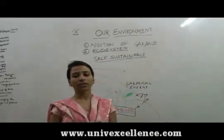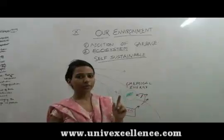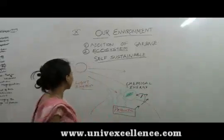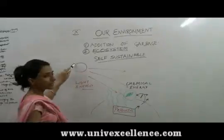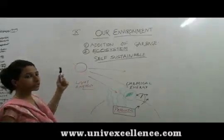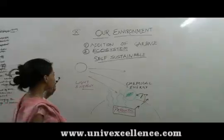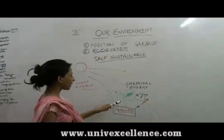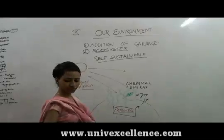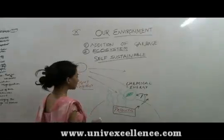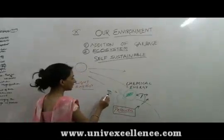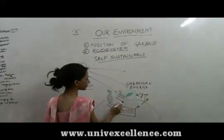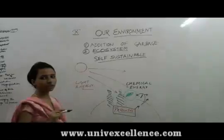Now we will learn about the biological components of the ecosystem in more detail. As we know, the sun is the biggest and the sole energy source for earth. When light energy falls on earth, plants are the ones which convert this light energy to chemical energy.